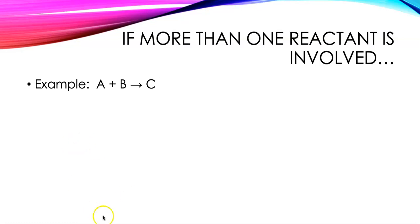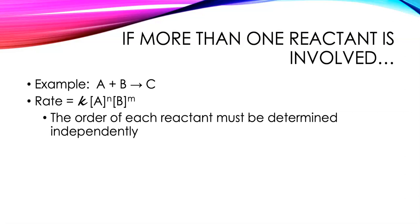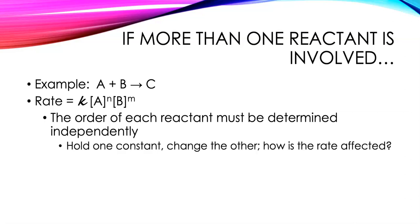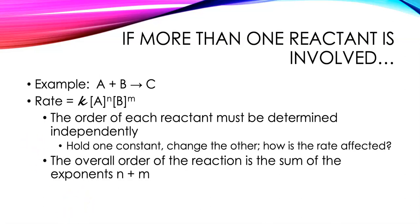What if there's more than one reactant involved? We need to do additional trials to figure out the concentration dependence on A and on B separately. We need a series of trials where A is held constant and B changes, and then trials where B is held constant and A changes. Once we've figured out the orders for A and B, the sum of those exponents — n plus m — is called the overall order of the reaction.